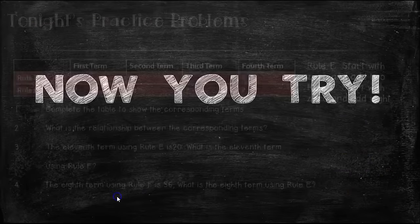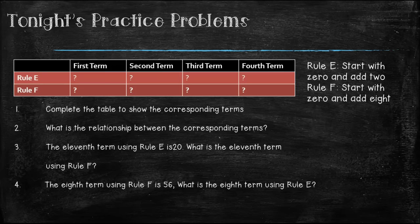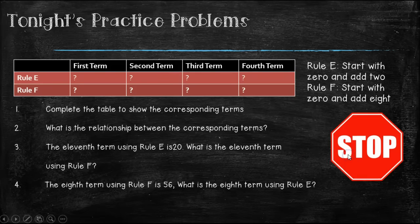Now it's your turn. Go ahead and see if you can solve this problem. Write down numbers one through four in the answers. Look at the rules up here and see if you can fill in the table and answer all of these questions. Go ahead and pause the video and come back when you're ready.